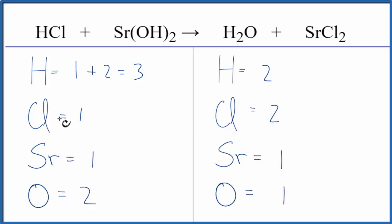Let's balance the chlorines first and then see what that does. So we have one here and two here, put a coefficient of two in front of the HCl, so we have one chlorine times the two, that gives us two chlorines, so those are balanced.